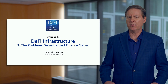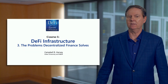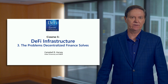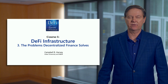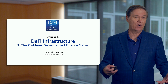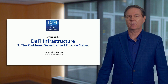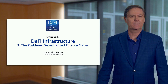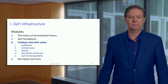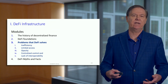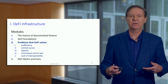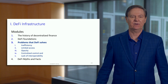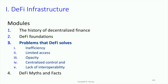In the third module, we're going to talk about, in some detail, the problems that decentralized finance actually solves. I've already given you an overview of these problems, but I want to go into more detail. Because in understanding the problems, you see the potential of this space. So we'll talk about inefficiency, limited access, opacity, centralized control, and lack of interoperability.